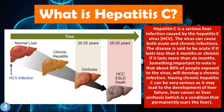So what is Hepatitis C? Hepatitis C is a serious liver infection caused by the Hepatitis C virus, also known as HCV. The virus can cause both acute and chronic infections. The disease is said to be acute if it lasts less than six months, or chronic if it lasts more than six months. Something important to note is that about 80% of people exposed to the virus will develop a chronic infection. Having chronic Hepatitis C can be very serious as it may lead to liver failure, liver cancer, or liver cirrhosis, which is a condition that permanently scars the liver.